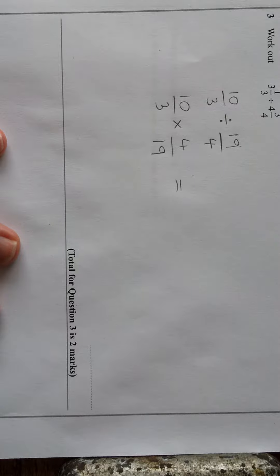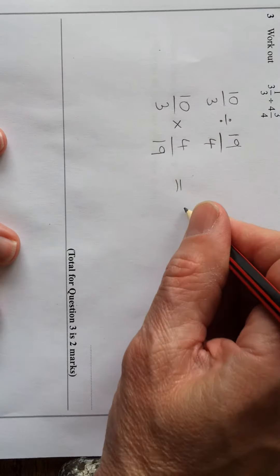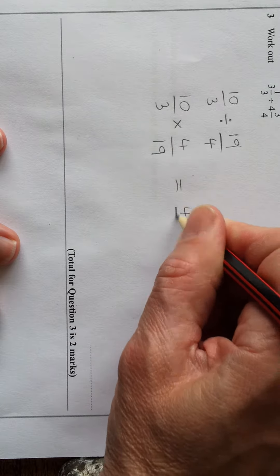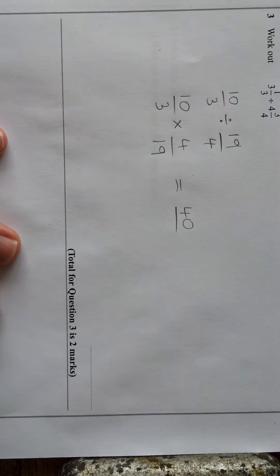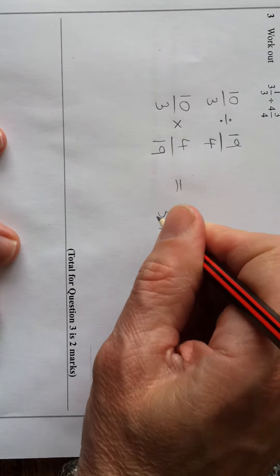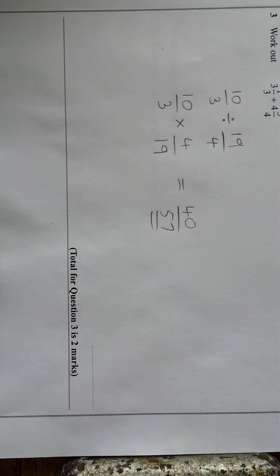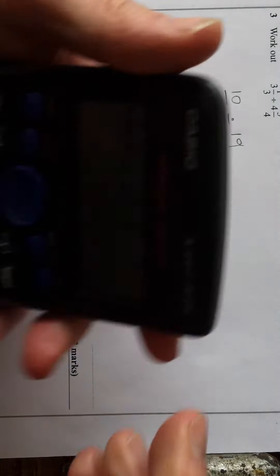So we'll just multiply the top and multiply the bottom. We get ten times four is forty, and three times nineteen—probably the easiest way to do that is three times twenty is sixty, subtract three, gives fifty-seven.